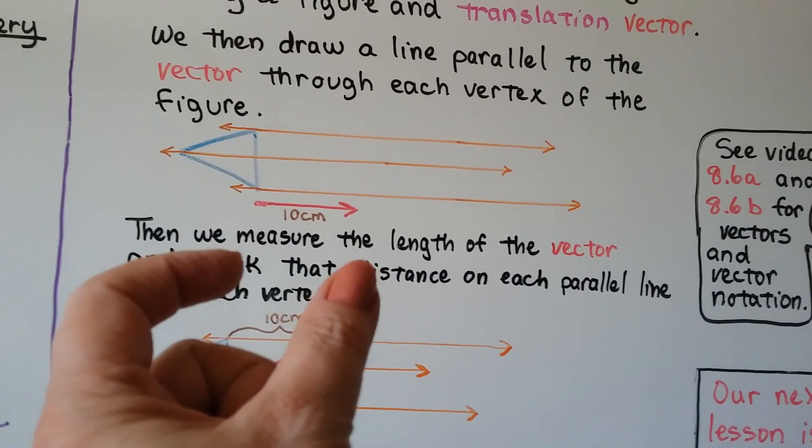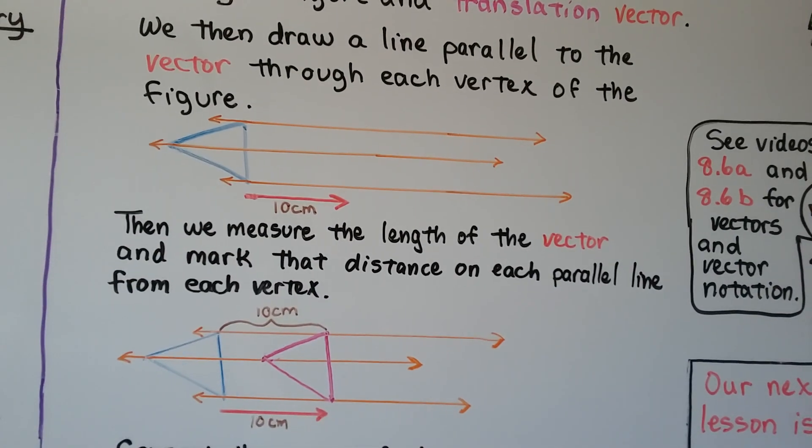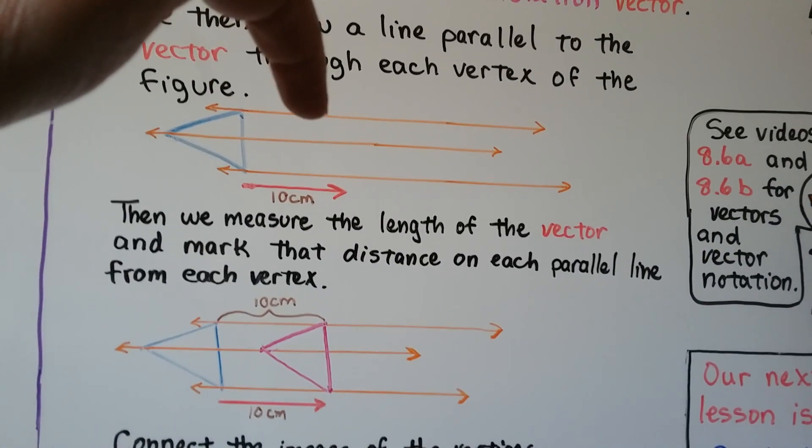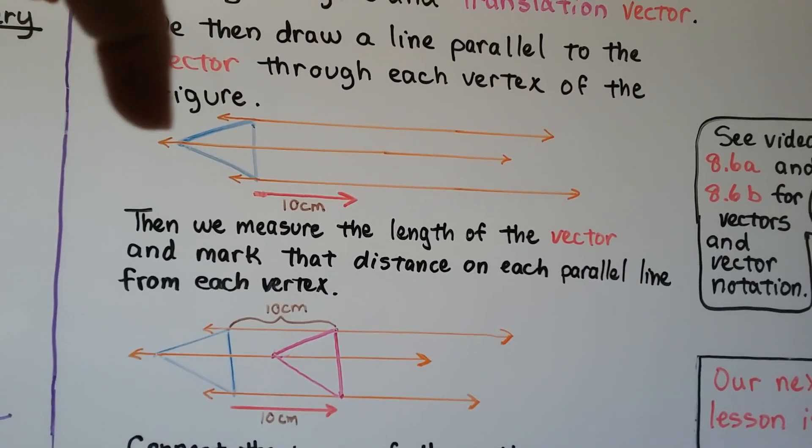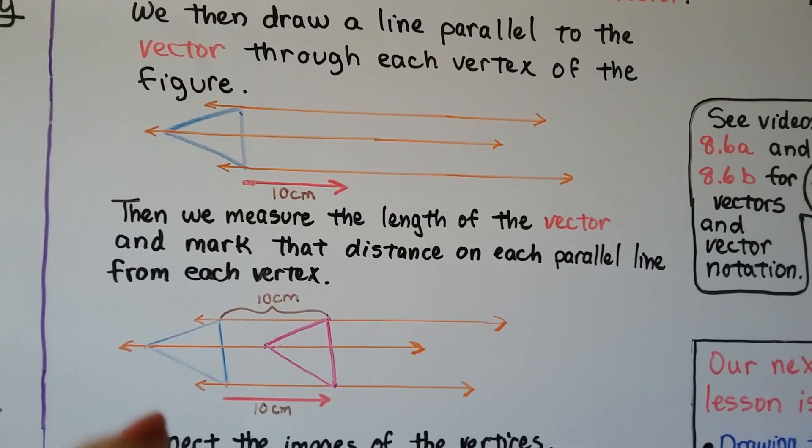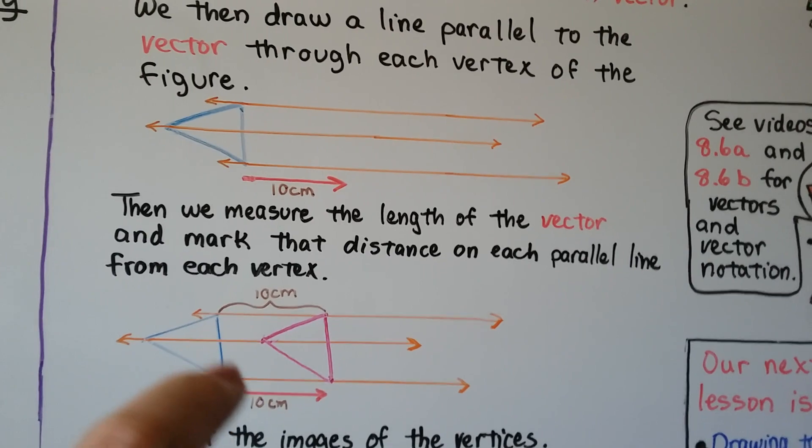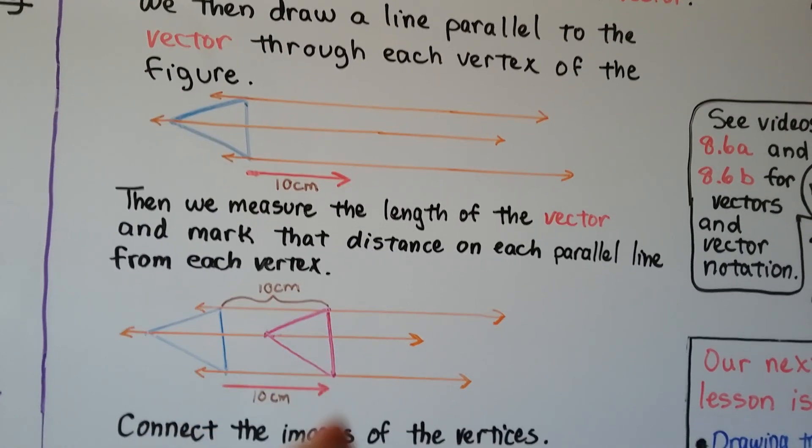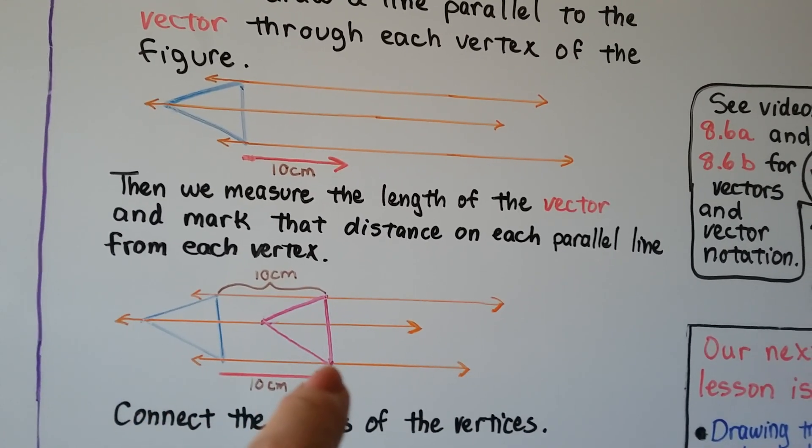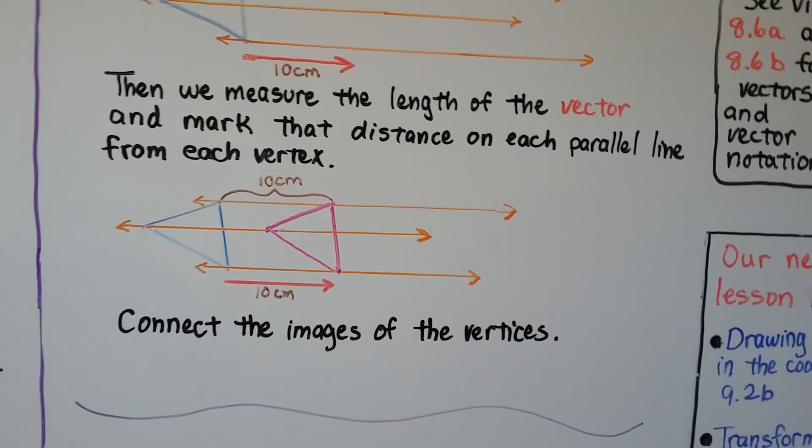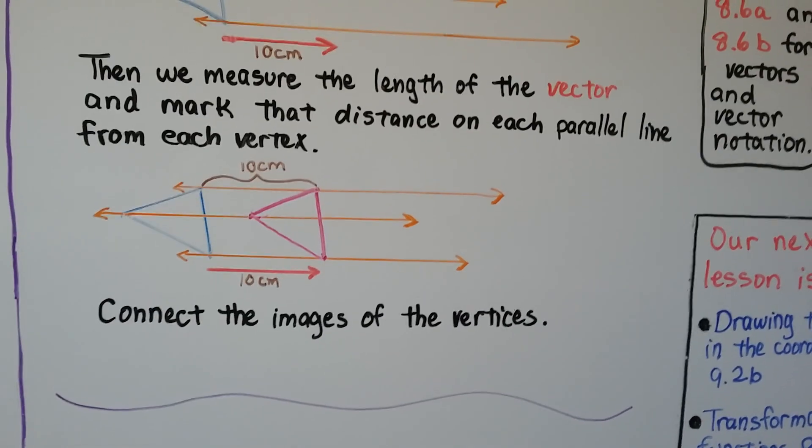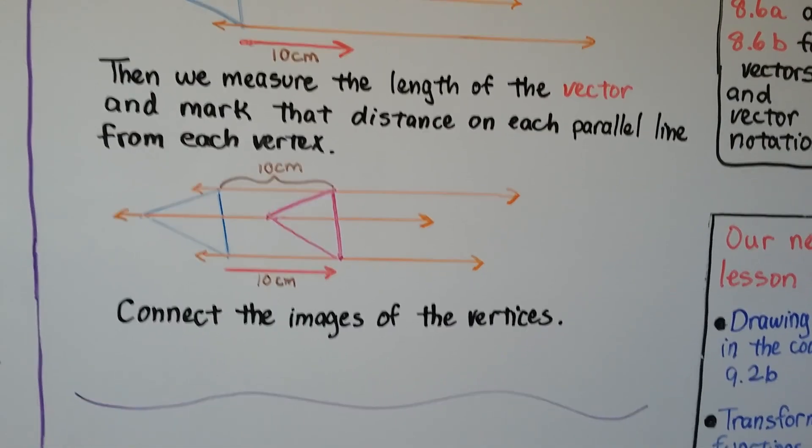Then we measure the length of the vector, 10 centimeters long, and mark that distance on each parallel line from each vertex. So from this vertex, 10 centimeters would be right here. From this one, 10 centimeters would be right here. And from this one, 10 centimeters would be right here. Then we connect the images of the vertices and we've made a translation.